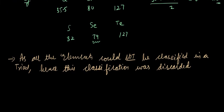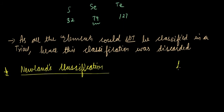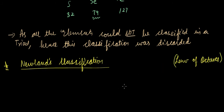Next, another scientist named Newland came forward. We will now see Newlands' classification, also called the Law of Octaves. He arranged then-known elements in an increasing order of their atomic masses and explained that every eighth element is similar in property with the first element, just like the musical notes of octaves.